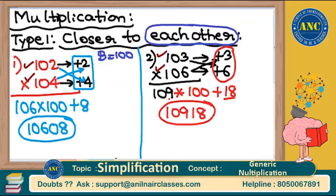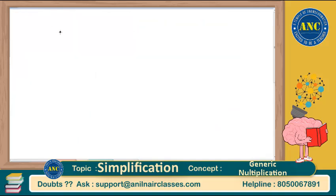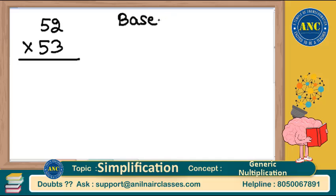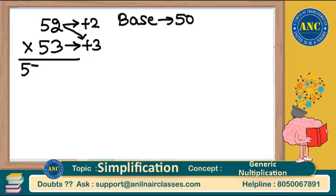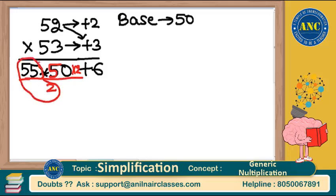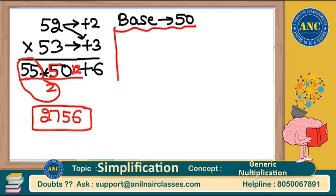The numbers don't have to be close to 100 — you can choose any base. For example, 52 into 53: assume base 50. 52 is 2 more than 50, 53 is 3 more than 50. Cross addition: 52 plus 3 is 55. 55 into 50: multiply by 100 and divide by 2, giving 2750. Plus 2 into 3 is 6. Answer is 2756.